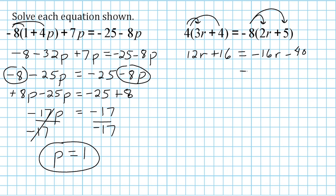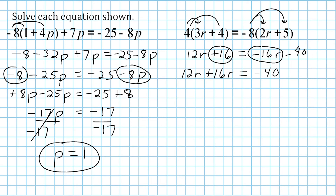Now we get all r terms on the left and all constants on the right. 12r is already on the left, so we keep it there, and we migrate negative 16r to the left as plus 16r. On the right we already have the constant negative 40, so we leave that, and write the inverse of positive 16, which is negative 16, on the right. Combining the left: 12r plus 16r is 28r. On the right, negative 40 and negative 16 add to negative 56.